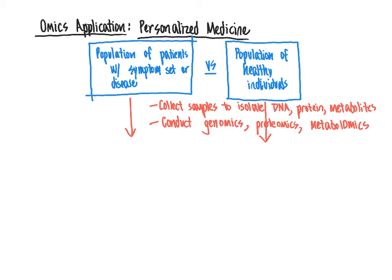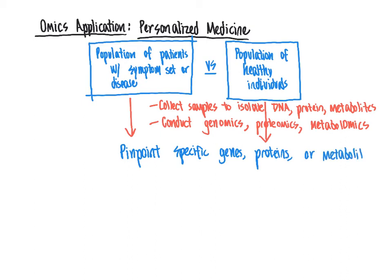That would establish a set of consistent differences that we can pinpoint between patients that have a disease and those that do not, ideally allowing us to identify specific genes, proteins, or metabolites linked to that particular disease. One conceptual example at the metabolite level: if you take a population of patients with diabetes versus those without and compare the metabolome, you would see differences in blood glucose levels.